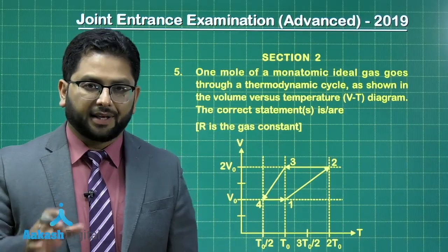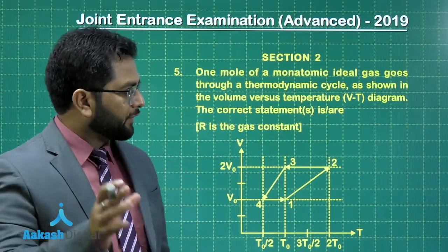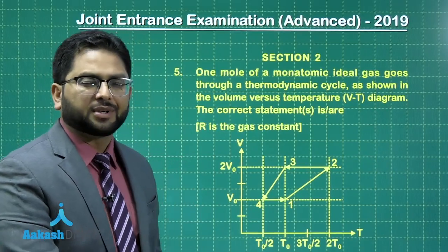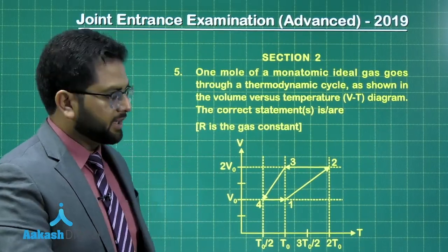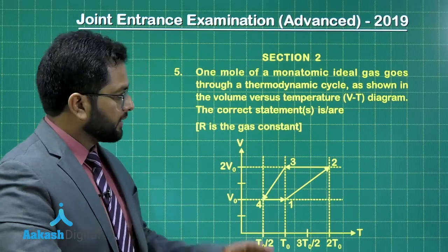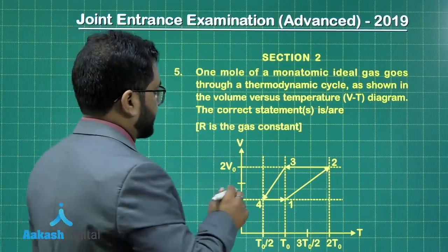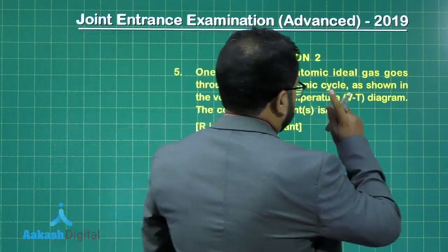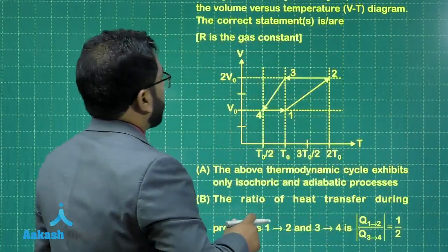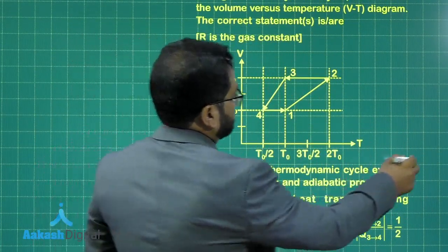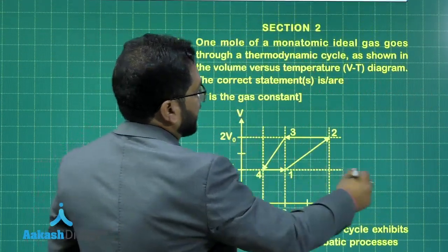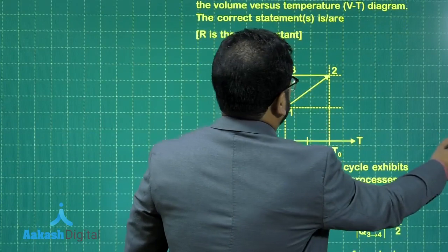Question number five is a very straightforward question from thermodynamics. Straightforward in this regard because if anyone has come to the level of JEE Advanced, then this should not be a difficulty. The graph is of a VT diagram. It's one mole of a monoatomic ideal gas. These are the key parameters.